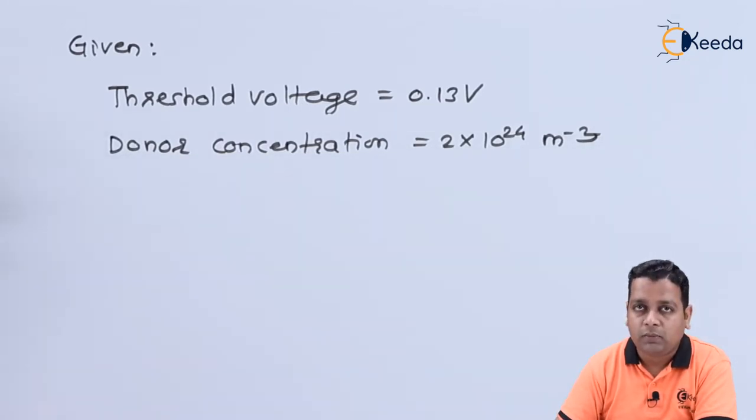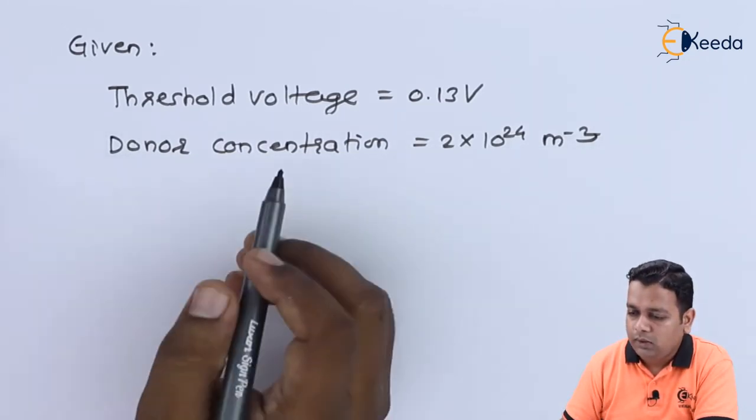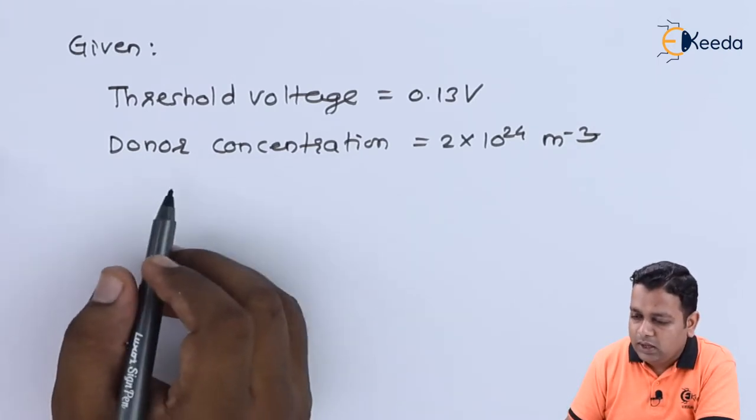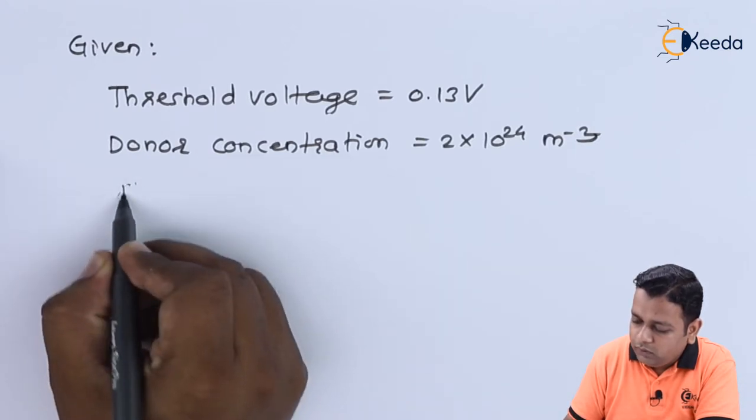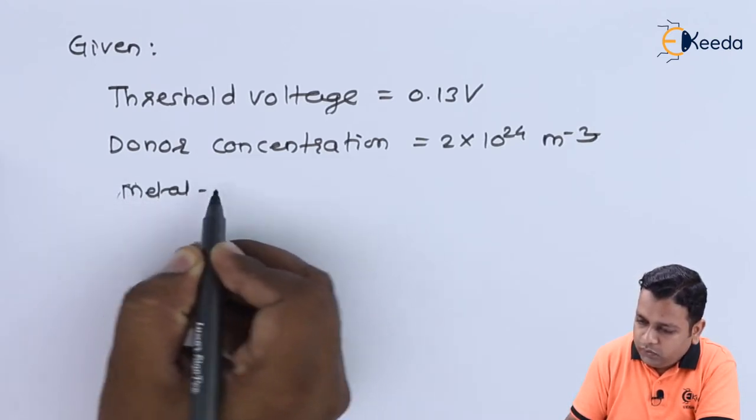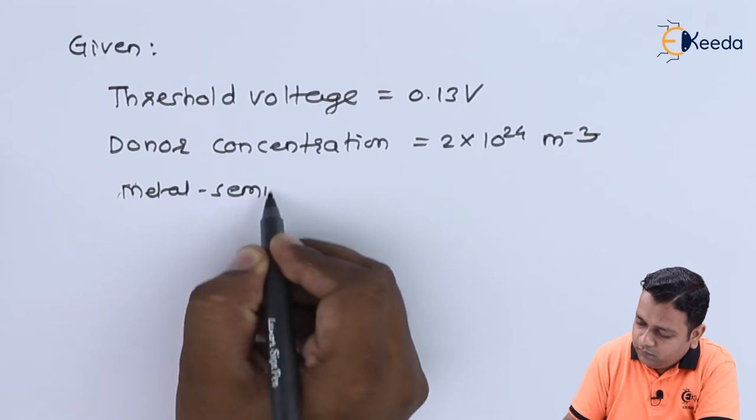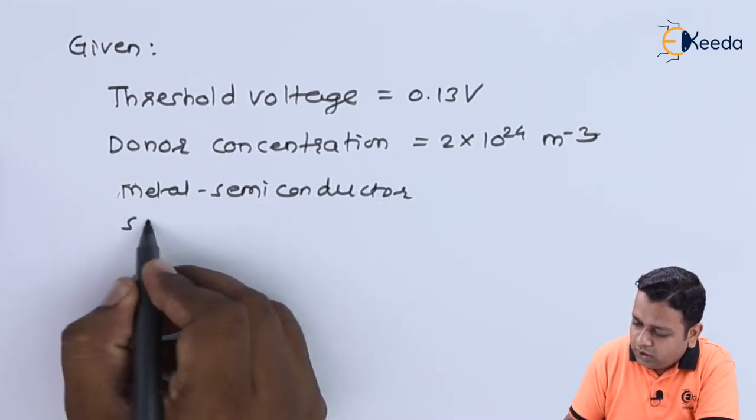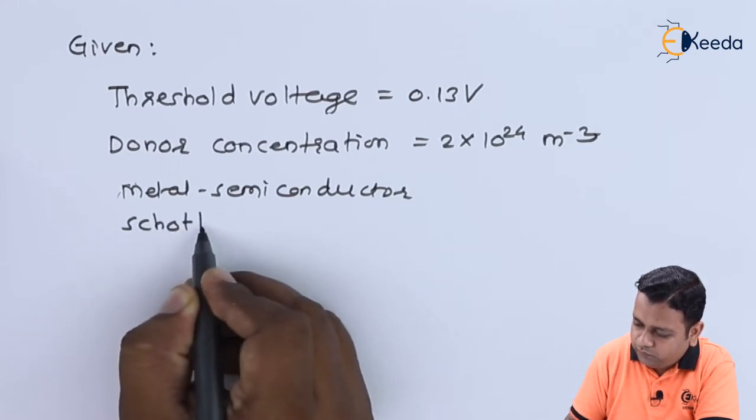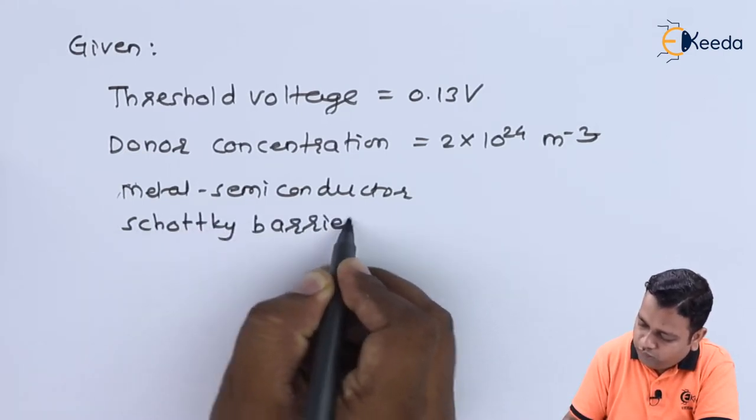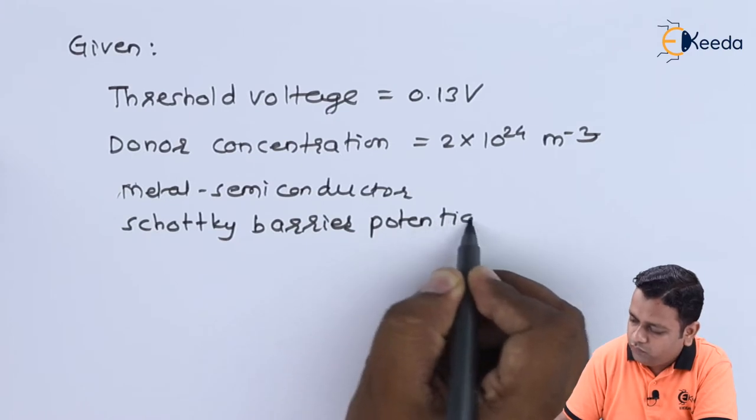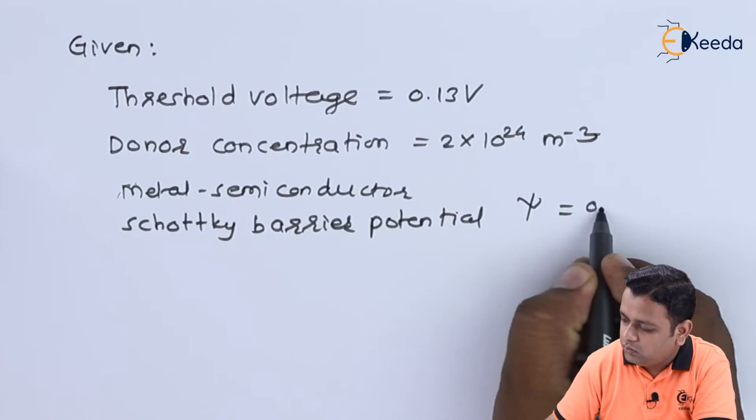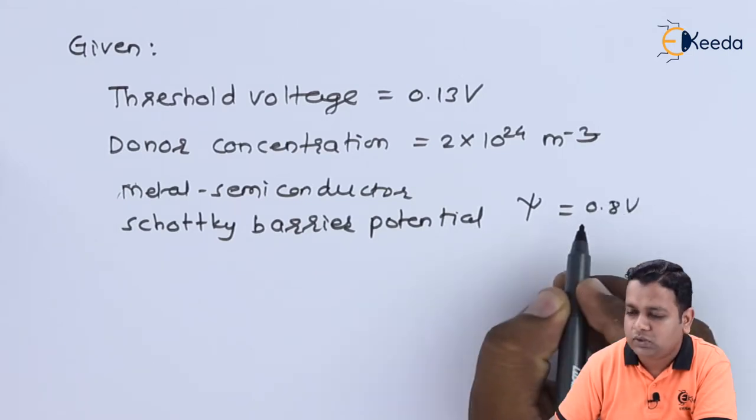Next, we have the representation by psi. The psi accounts for the metal to semiconductor Schottky barrier potential. This potential represented by psi equals 0.8 volts.